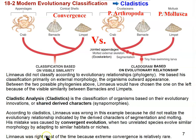Linnaeus was right most of the time, however. A lot of the things that Linnaeus classified, we still have the same classification today because extreme convergence like this is relatively rare. So most of the time, by looking at the external morphology of organisms, Linnaeus was able to classify them relatively correctly according to phylogenetic relationships — though he didn't know that he was classifying them according to phylogenetic relationships.